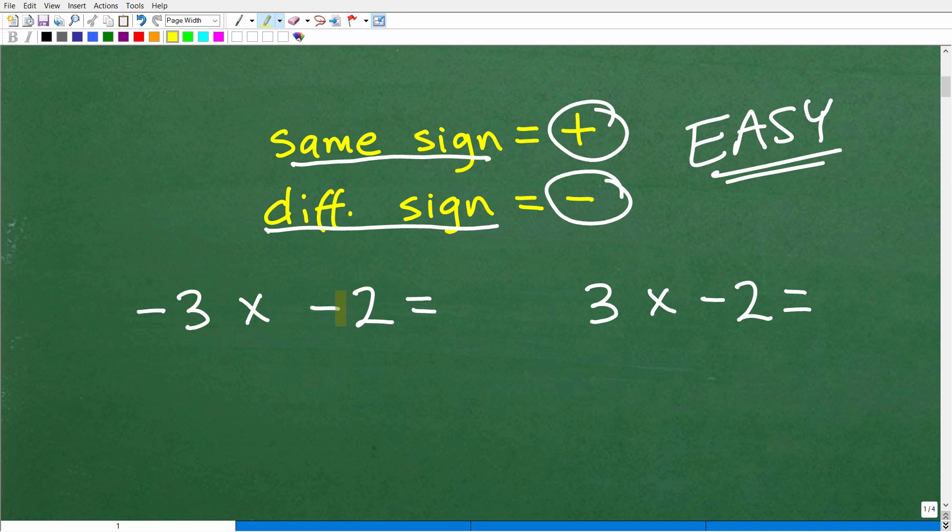So I have negative 3 times negative 2. So what is the situation? Do these numbers have the same sign or different sign? Well, negative and negative, these numbers have the same sign. So the answer is positive. So negative 3 times negative 2, just multiply the numbers. That is going to be a positive 6.